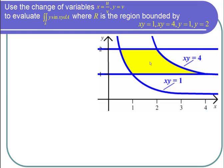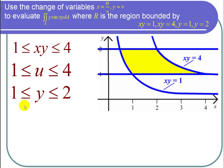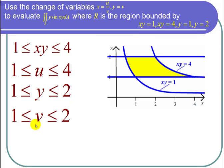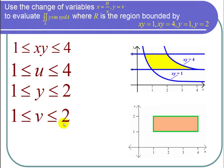So we see this region is such that xy is between 1 and 4. But that's nice because if I multiply x times y, I get u over v times v which is just u. So I can say that u is between 1 and 4. Also y is between 1 and 2, but y is v. So if y is between 1 and 2, v is also between 1 and 2. So that gives us a rectangle with u between 1 and 4 and v between 1 and 2.